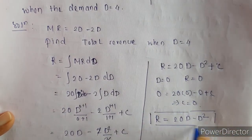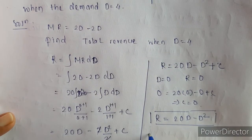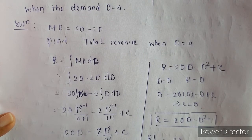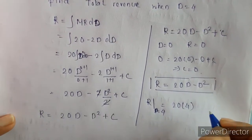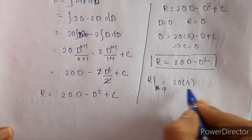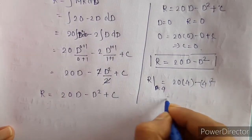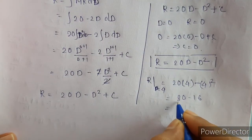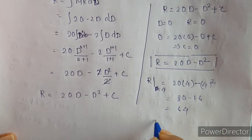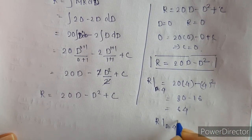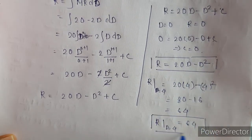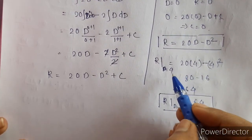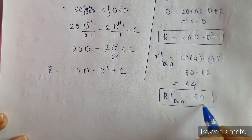We got our revenue function. Now we have to find the revenue when demand is given as 4. Substituting D = 4: 20 times 4 minus 4 squared, which is 80 minus 16, equals 64. So revenue when demand is 4 is 64.